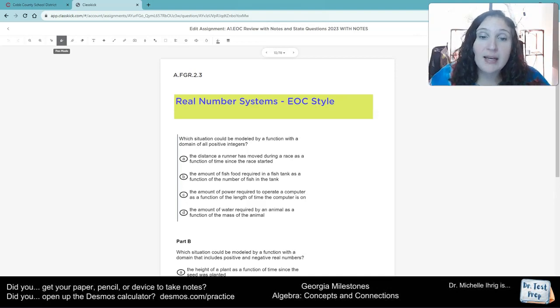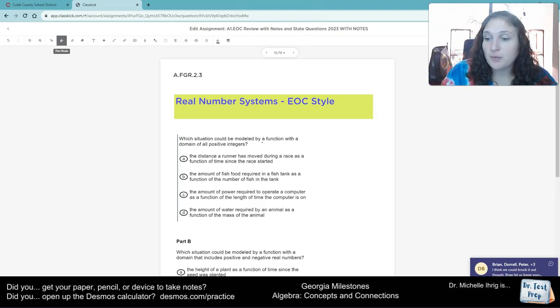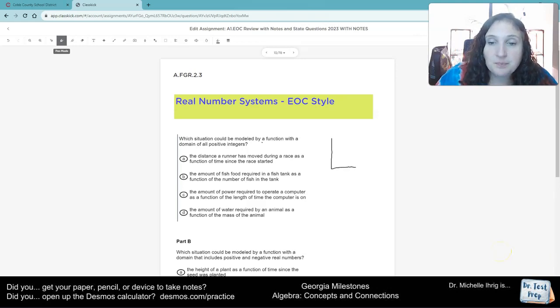Here's a secret. Anytime they say as a function of, what that means is if this is our y-axis and this is our x-axis, it goes like this. So for example, the distance a runner has moved during the race. So distance as a function of the time.